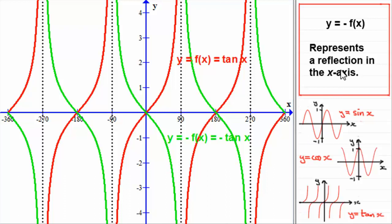Well, I hope that's given you an idea then of how this transformation y equals minus f of x works for these trig graphs. It represents a reflection then in the x-axis.